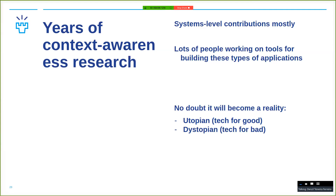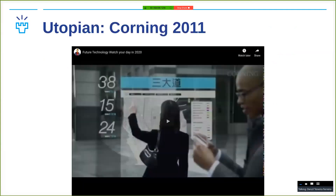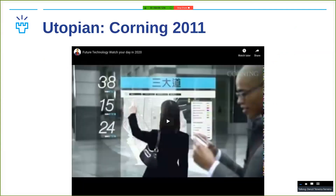There are two different visions for this. One is more utopian, where technology is used for good. There's also the dystopian side, where technology can be used for bad. I have a couple of videos showing these. This first one is the utopian vision of how context awareness could be used in a good way.